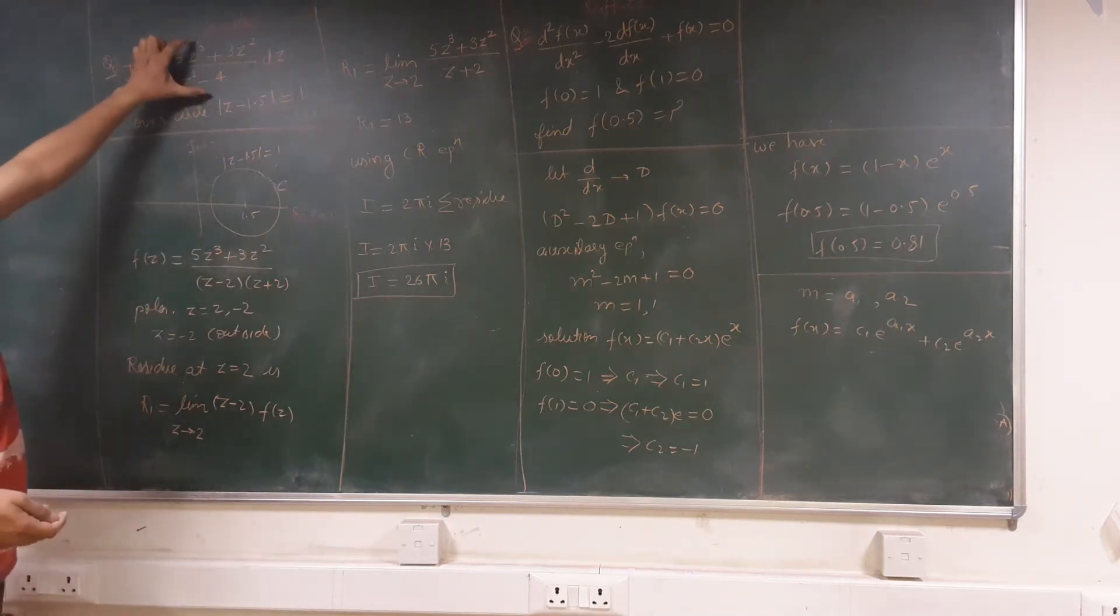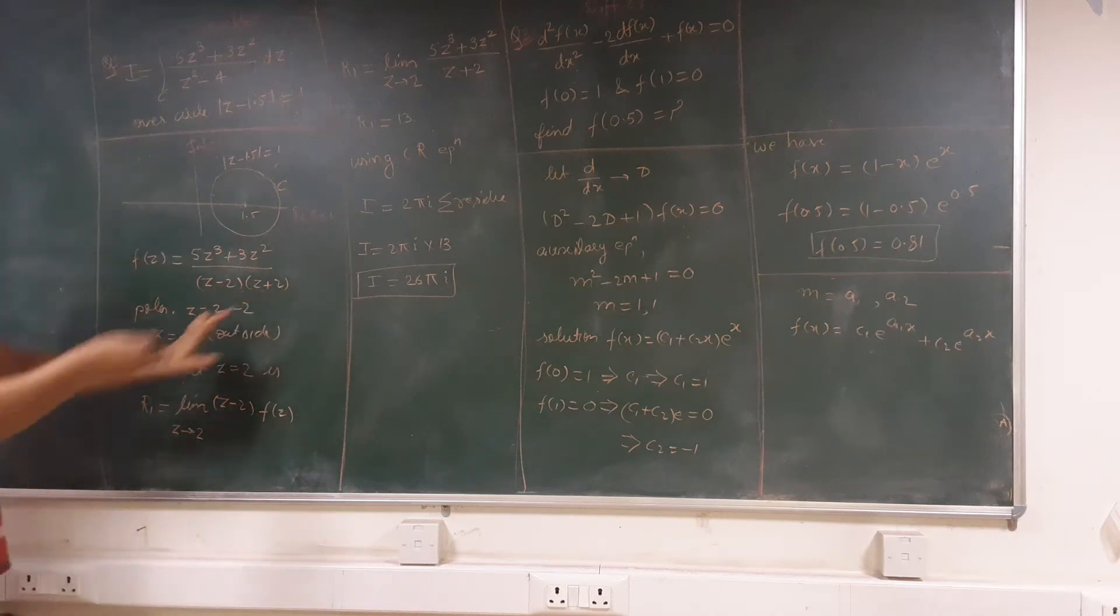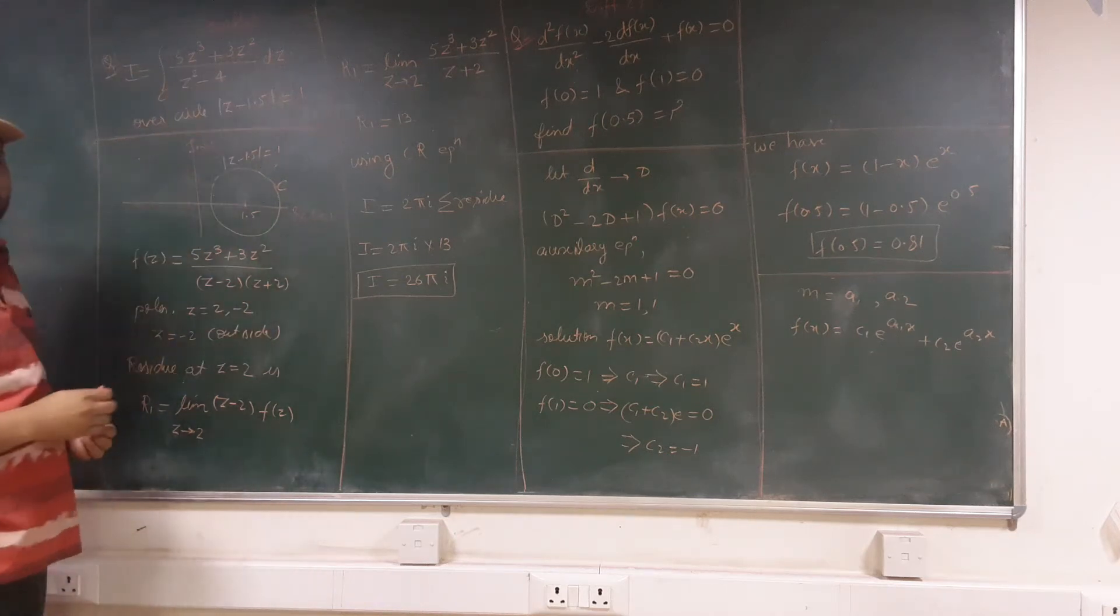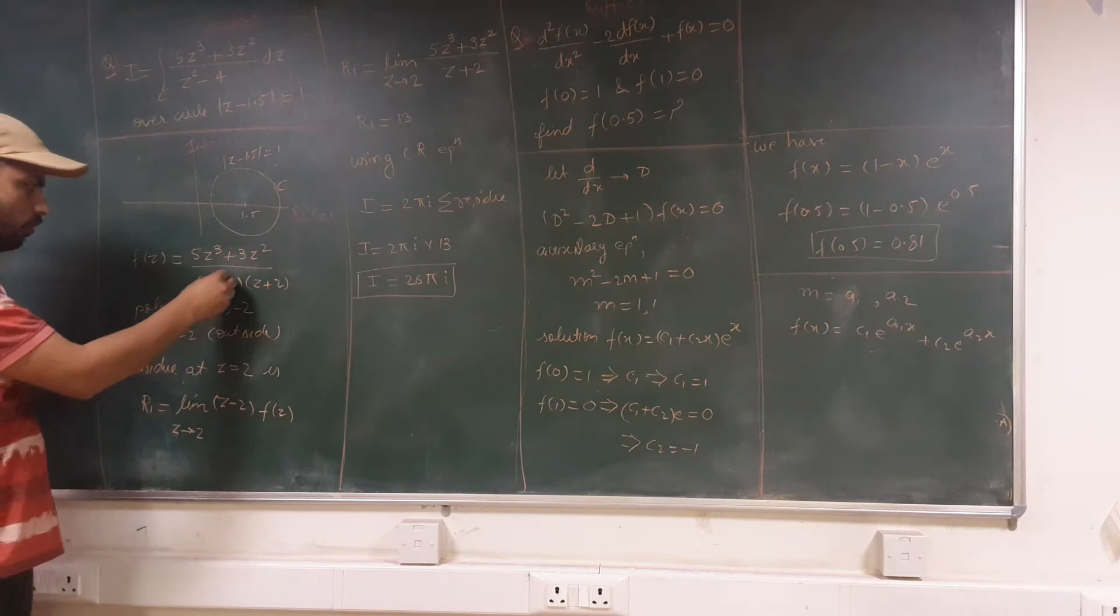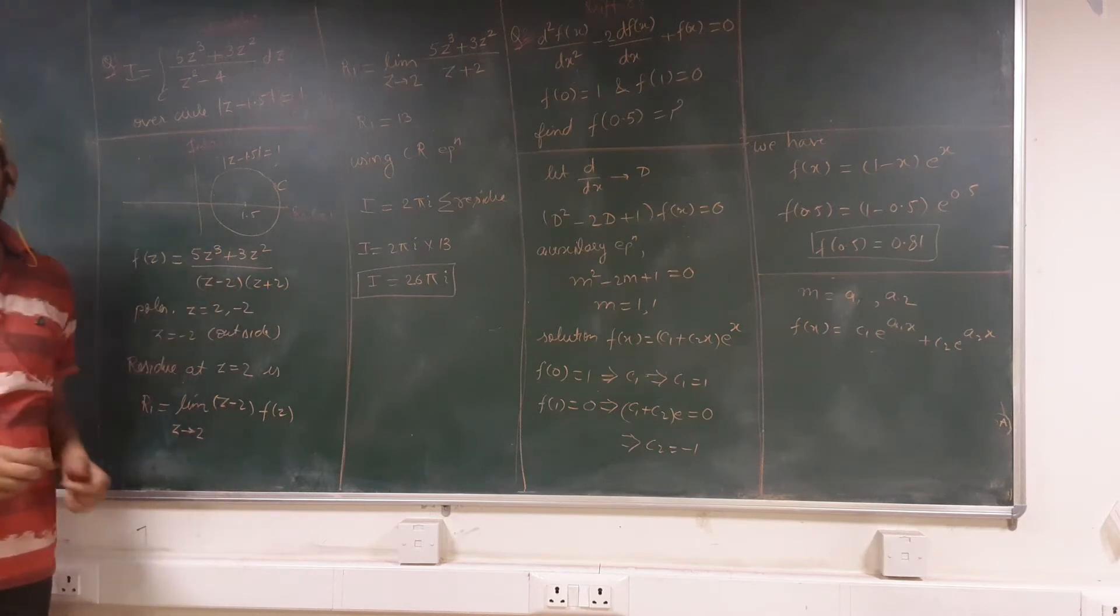Now this function can be written as this. I have taken the product z² - 4 as factorized (z - 2)(z + 2). From this denominator we can find the poles. Poles of this function will be z = 2 and z = -2.